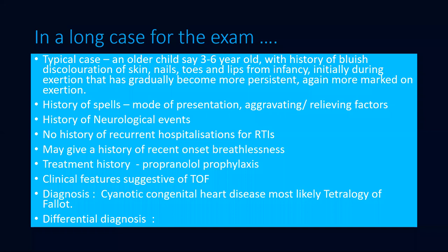In an exam, in a long case, you usually get an older child, like say three to six years old, with a typical history of bluish discoloration from infancy. It's usually exertional to begin with and it becomes persistent. Then there is a history of spells, the mode of presentation, aggravating and relieving factors, history of neurological events if any, history of recurrent hospitalizations for respiratory tract infections, breathlessness, and history of treatment. With all these findings, you come to a diagnosis suggestive of Tetralogy of Fallot.